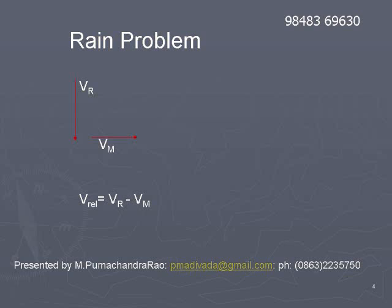then the relative velocity is vr minus vm, the relative velocity of rain with respect to man. Velocity of rain minus velocity of man gives the relative velocity of rain.